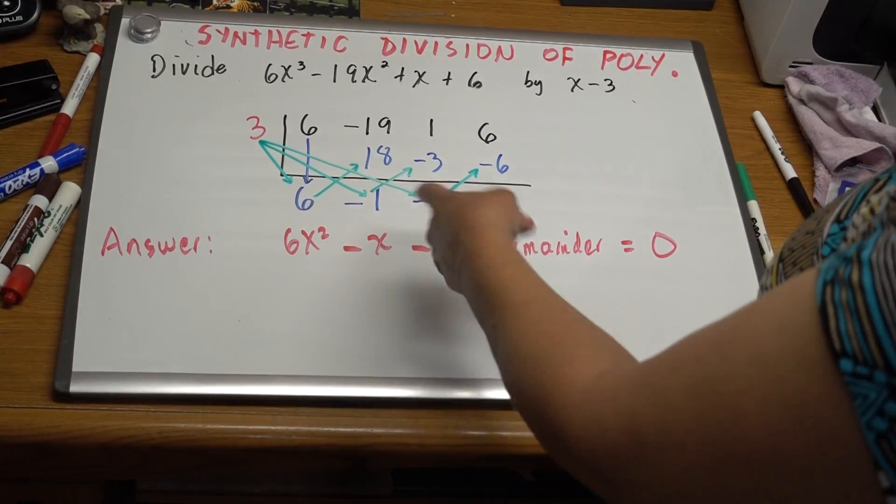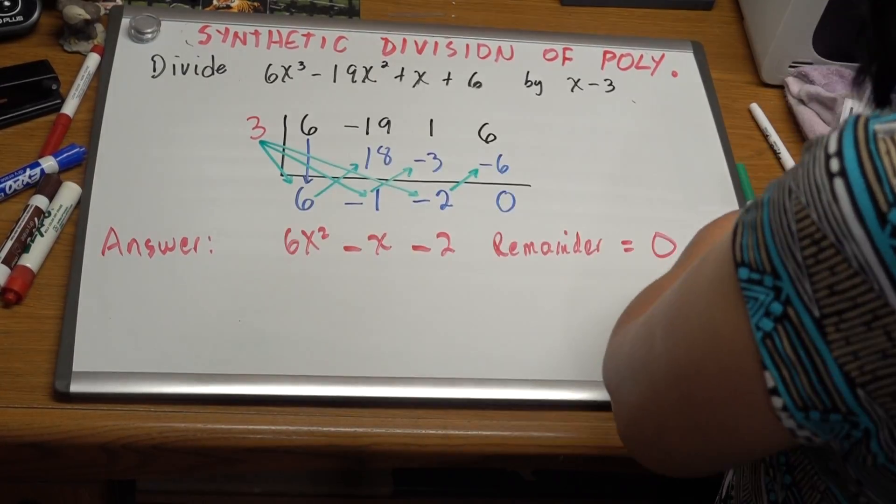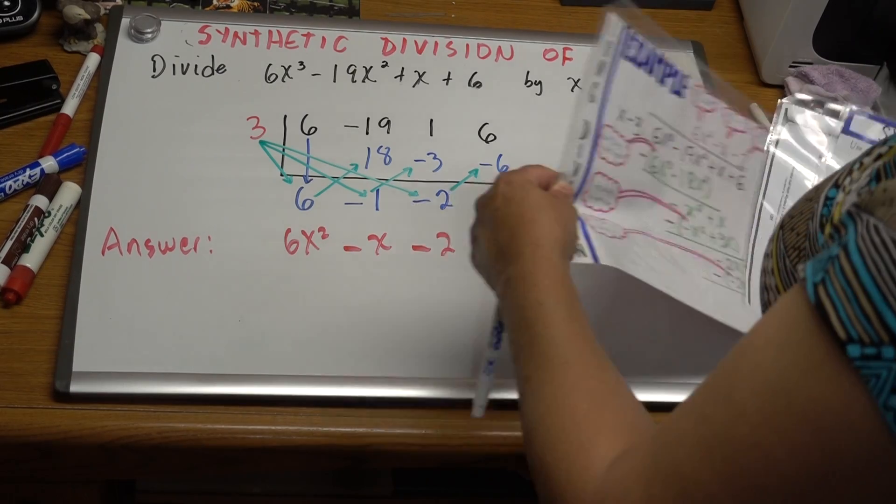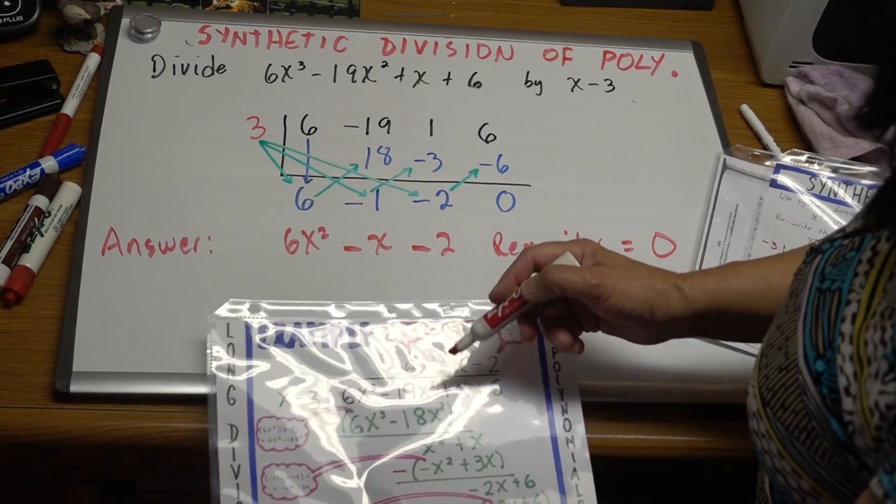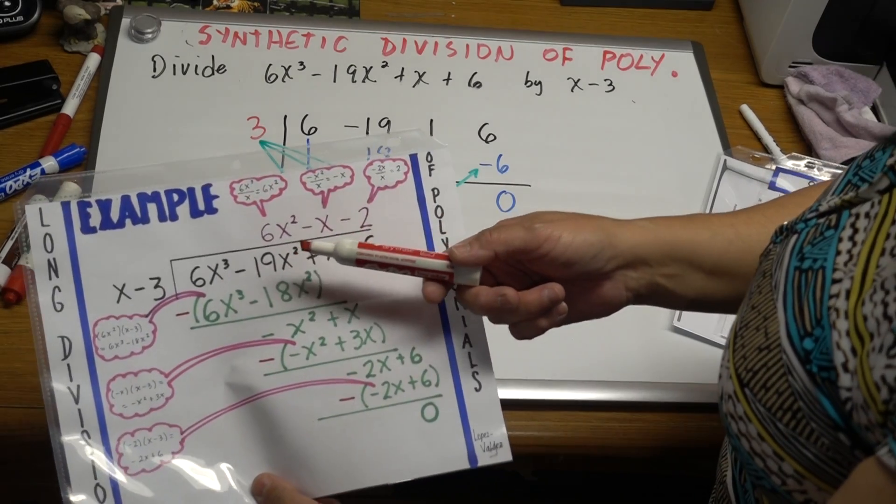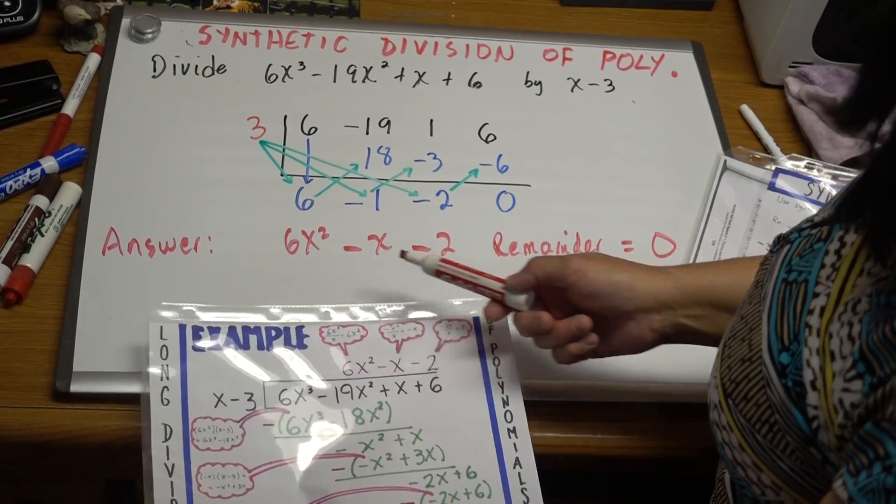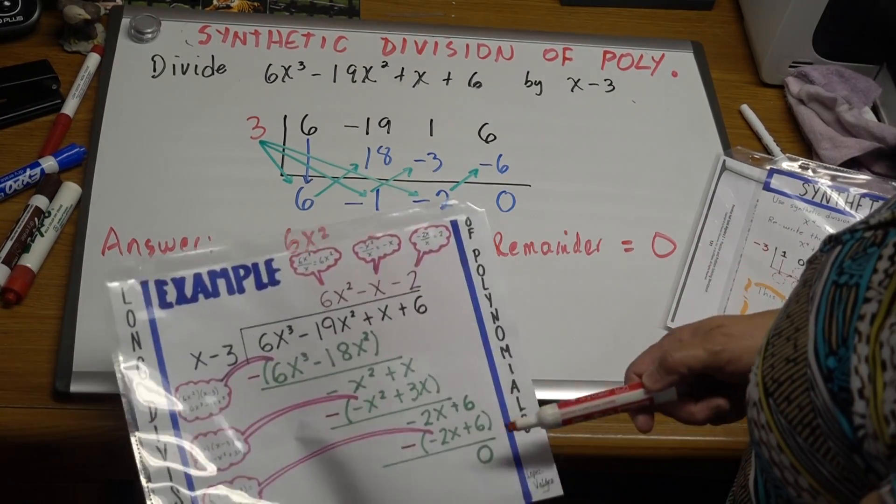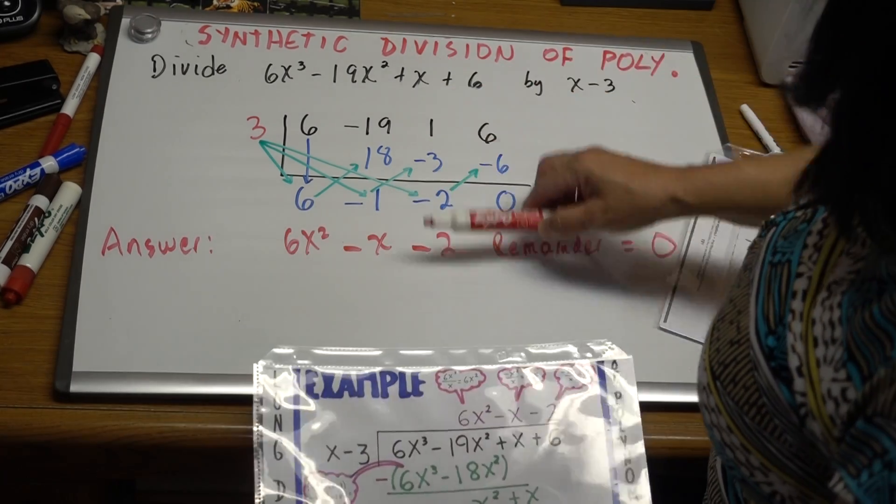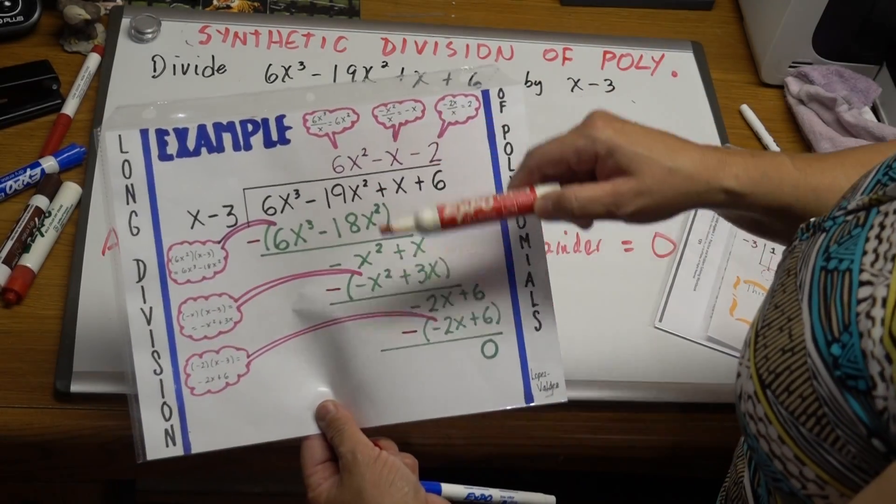This is exactly the same division as the previous one, like I told you. This is the quotient, 6x² - x - 2, see? Remainder's 0. Like I said, this is a shortcut of this process.